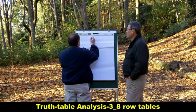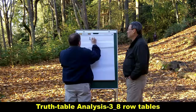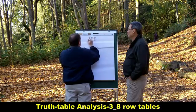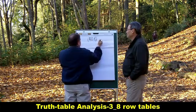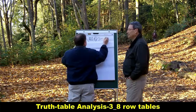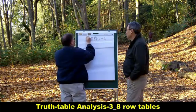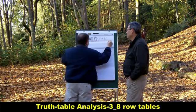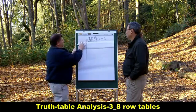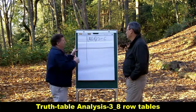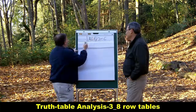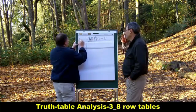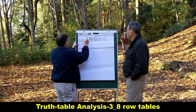So suppose we have a formula, A ampersand B, parentheses, horseshoe tilde C. We're gonna put this on top of the table, draw the lines, and over here we're gonna write the letters that are in the formula. In this case, we have an A, a B, and a C.